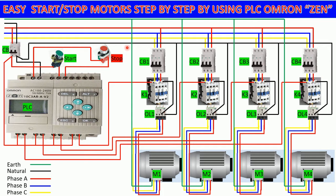Before we go to create the program, I would like to explain a little bit about the components and function of this diagram. This is a control breaker connected from the main circuit breaker at 220 volts, and we will connect to the PLC Omron CPU model 10C3AAB2. This means the input is 220 volts.